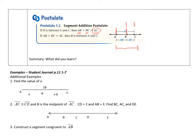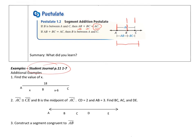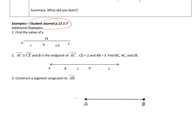So I'm going to do a couple of examples. For the first one, find the value of X. Using the segment addition postulate, I know that if I add up this piece plus this piece, I'll get the full 18. So X plus (X minus 6) equals 18. So 2X minus 6 equals 18. 2X equals 24. X will be 12. And you can go ahead and check that answer and you'll see that it works.